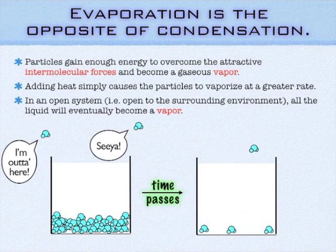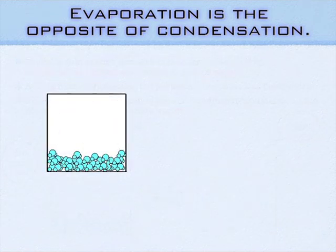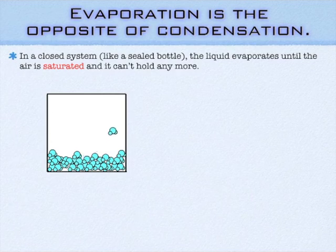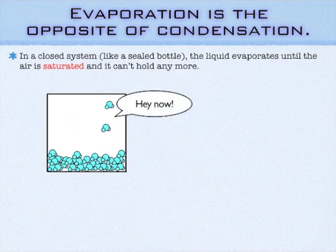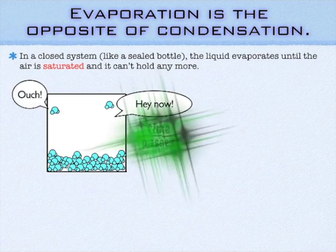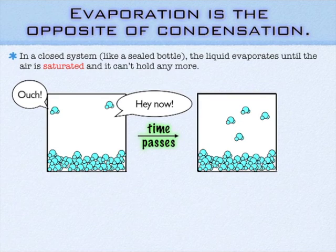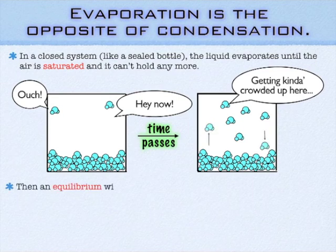But if you seal the system, then eventually what's going to happen is you're going to build up an equilibrium — you're going to get a lot of those particles up into the air, but eventually it's going to become saturated. You're not really going to be able to fit any more particles up there as a vapor. At that point, you're going to set up an equilibrium, meaning that every time another water molecule — or whatever particle it is — wants to get into the air, something's got to leave the air. We've talked about the idea of equilibrium before.